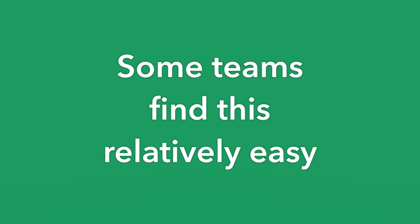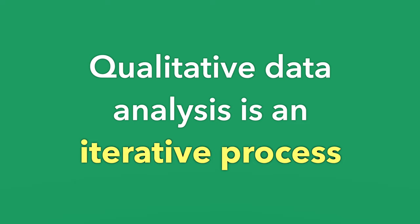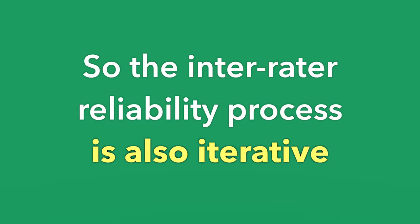Some teams find this relatively easy. Qualitative data analysis as a whole is iterative, and so of course the inter-rater reliability process in qualitative data analysis is going to be iterative. Some teams make steady forward progress. I was working with a team recently where on day three of their coding bootcamp they were still deciding how they were defining things and what they were coding for. Depending on your project and who you're working with and how much experience they have with qualitative data analysis can really make this process more challenging or go slightly more smoothly.